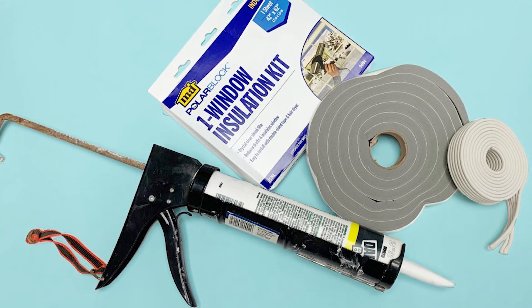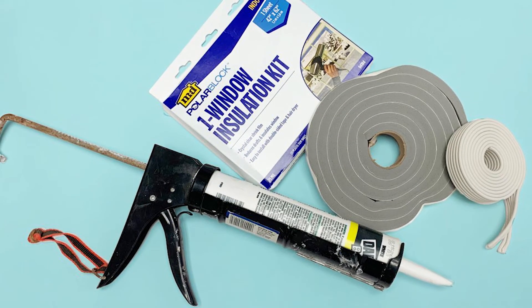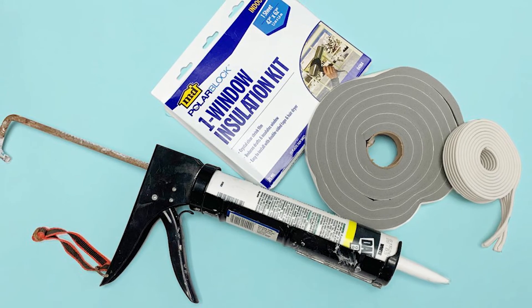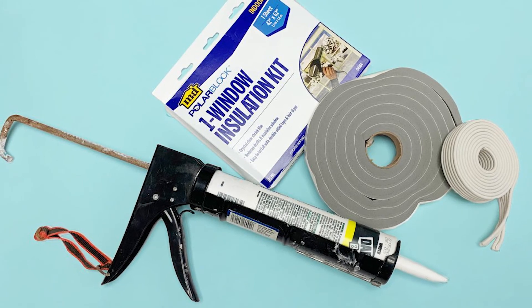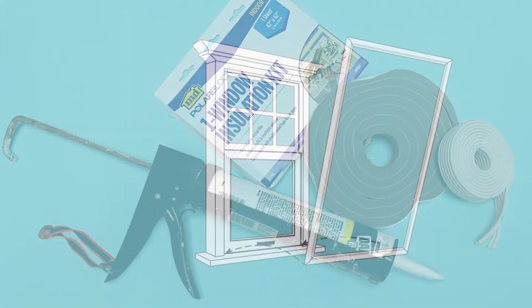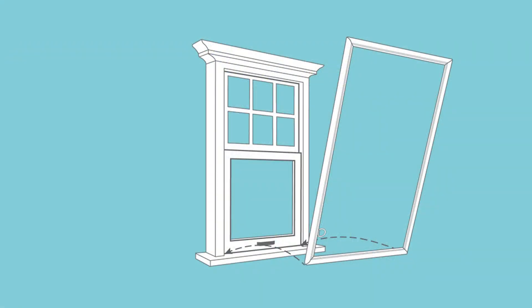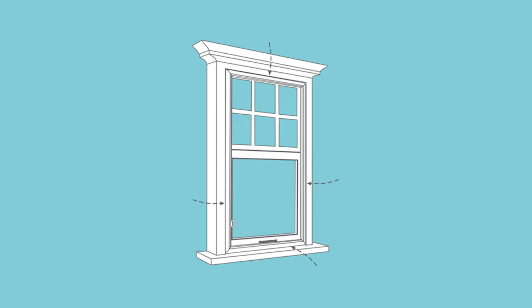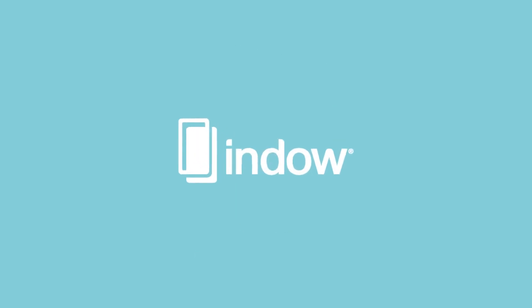Visit our website for step-by-step instructions on how to seal window leaks using caulking and weather stripping. For advanced window insulation, read about our press and place window inserts — all at endowindows.com.